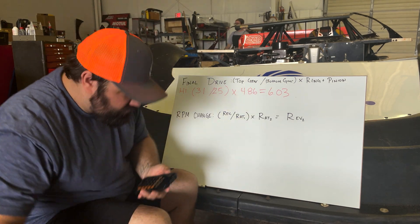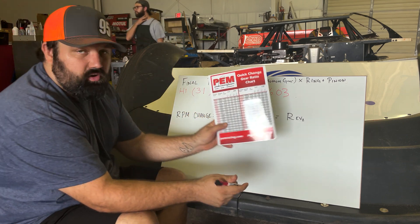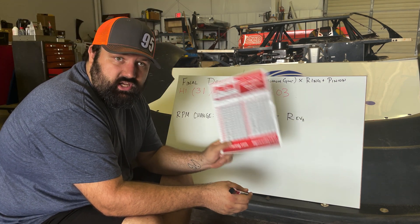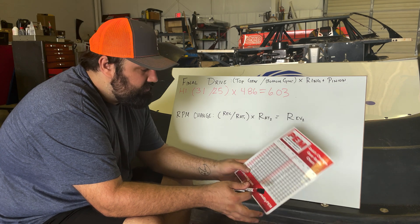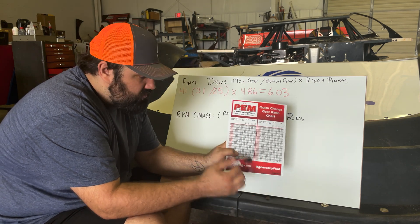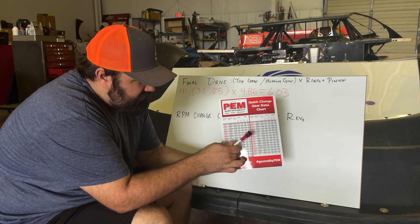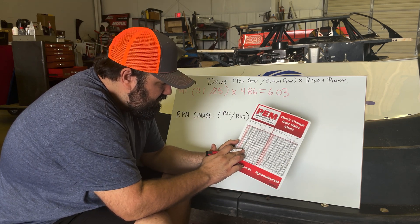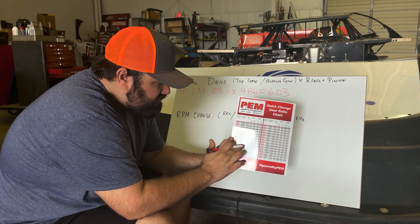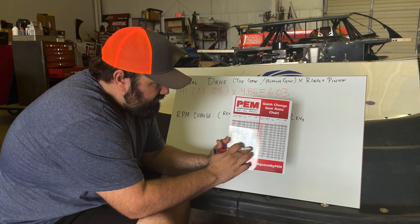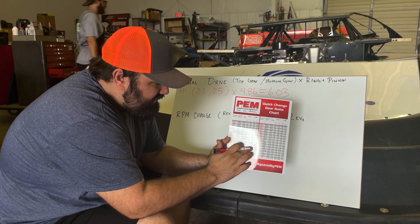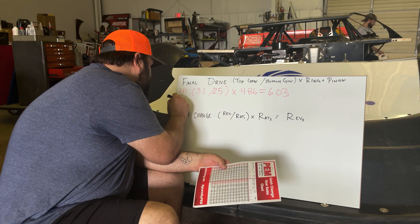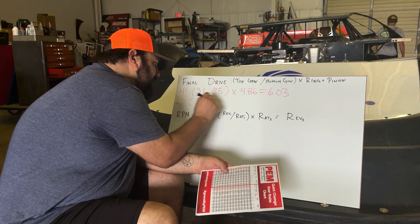Looking at our gear chart — this is a PEM gear chart, but you can get these from almost any quick-change gear or rear end manufacturer. They all have a gear chart with part numbers, number of teeth, and final drives. We're looking for set three, which is right here: 25-31. The high ratio for a 4.86 ring and pinion is 6.03.